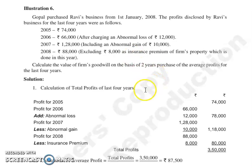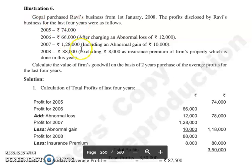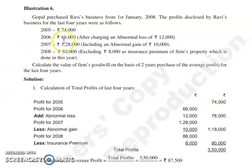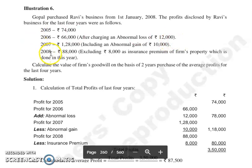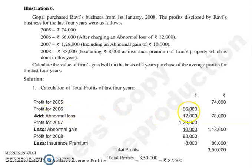First of all, we will adjust the profits. 2005 profit: 74,000, as it is. 2006 profit: 66,000, after charging an abnormal loss of 12,000. So we will add the abnormal loss back to 66,000. Profit for 2006: 66,000 plus abnormal loss of 12,000, giving us 78,000.